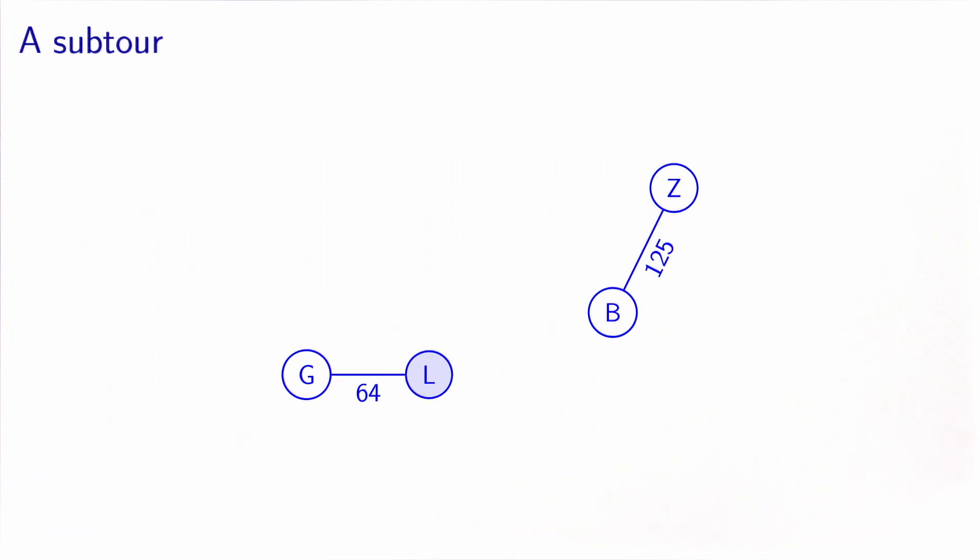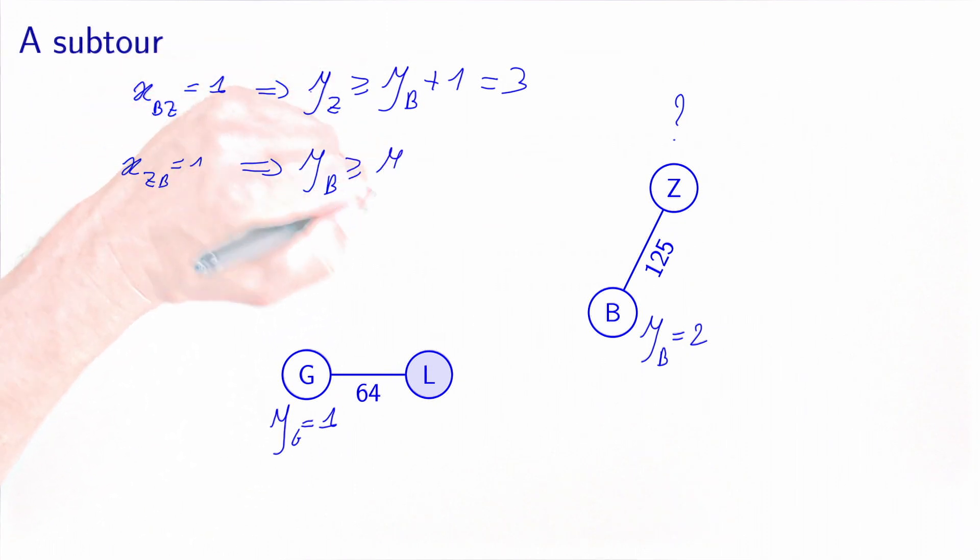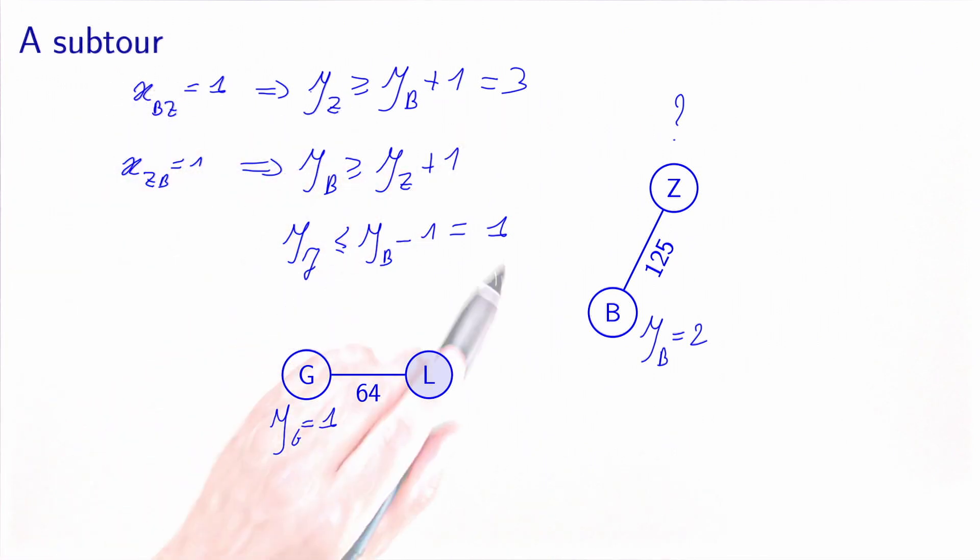If we now consider the example that was not valid, we can put yG equals 1, which would be okay. We could put yB equals 2. But then what do we put for yZ? Remember that because xBZ equals 1, we need yZ to be greater or equal to yB plus 1, which is 3. And because xZB equals 1, we need yB to be greater or equal to yZ plus 1, which means yZ less or equal to yB minus 1, which is equal to 1. It's not possible for yZ to be both greater or equal to 3 and less or equal to 1. So this is not feasible. This constraint will be violated, and the subtour will be eliminated.